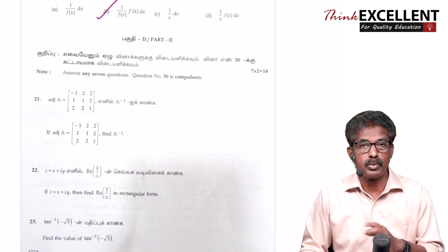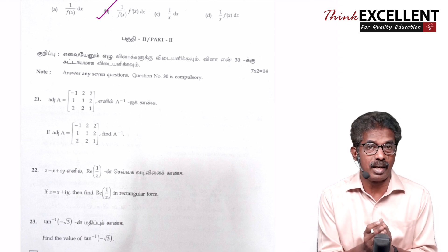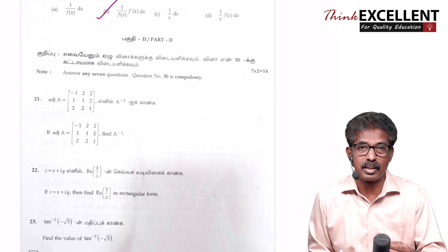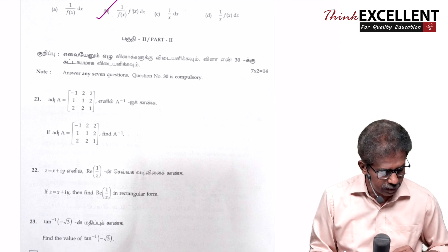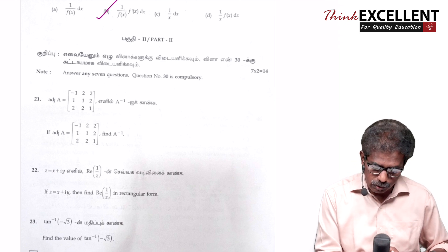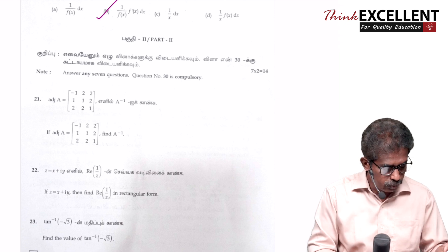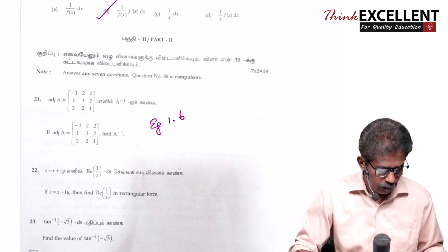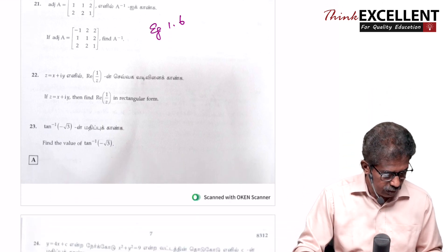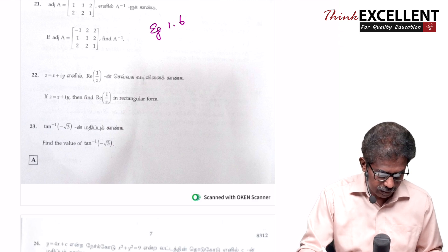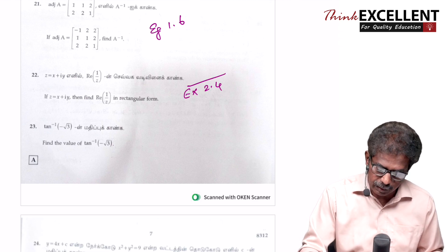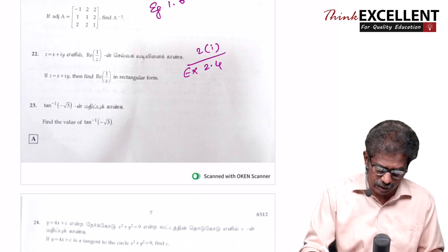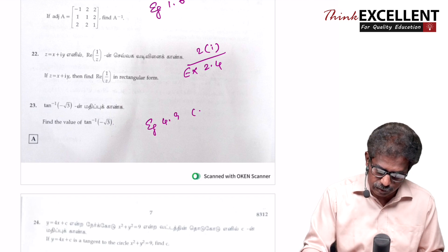Section B has two created questions — question number 29 and 30. I will teach you in two different ways; you can do them in two methods. Let me go through the questions quickly one by one. The first one is adjoint A, which equals A inverse. That is from Example 1.6. Then the 22nd question — a very simple one, rectangular formula, Exercise 2.4, question 2, first subdivision.